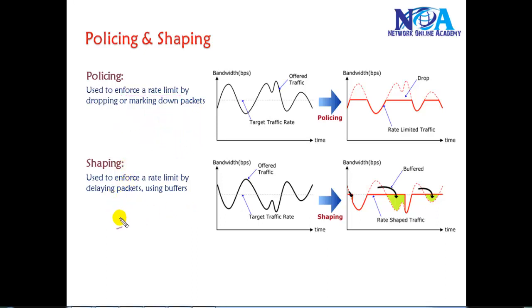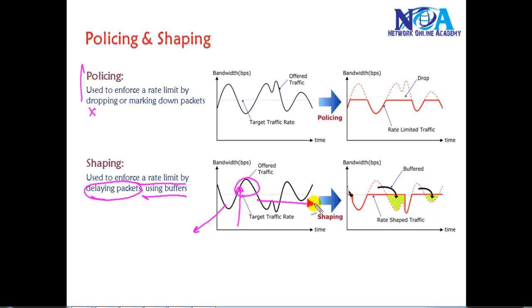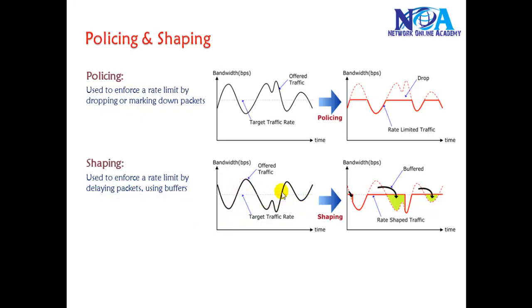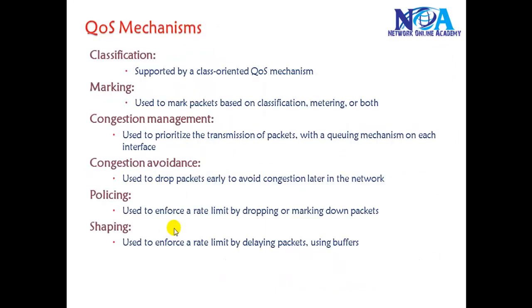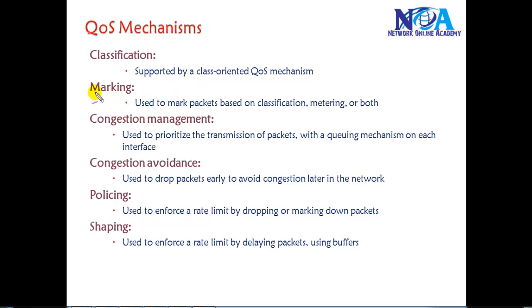Shaping works similarly — we define a limit for specific traffic, but once it reaches the limit, instead of dropping the packets like in policing, we delay them by storing them in a buffer, ensuring they are sent without being dropped. That is what we call traffic shaping. In this section we've given an introduction to the different QoS mechanisms, which ensure that high-priority traffic always gets forwarded and that when the network gets congested, low-priority and high-priority traffic are differentiated and preference is given accordingly.